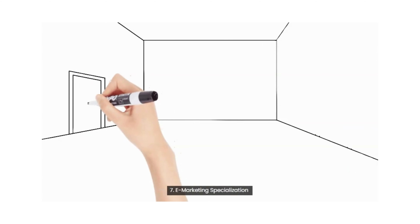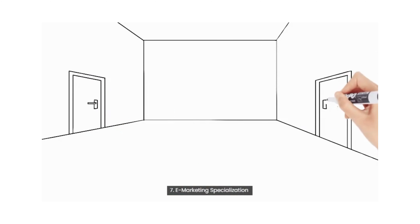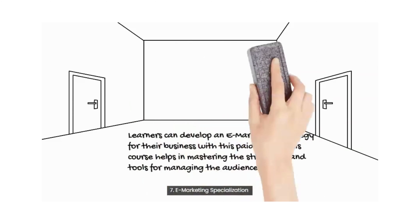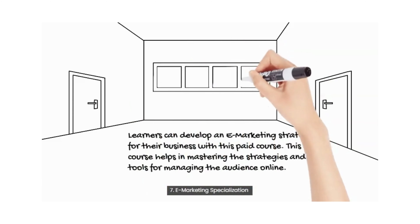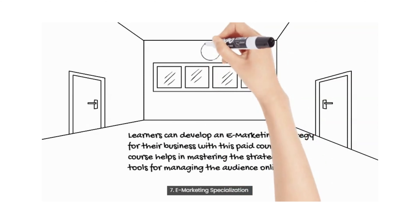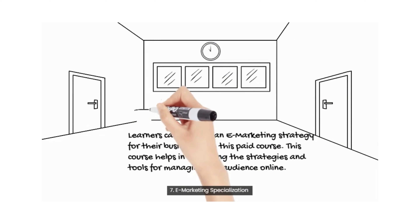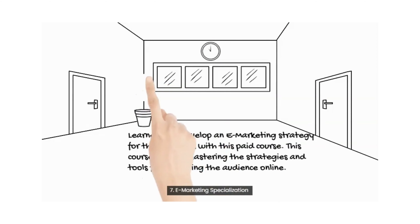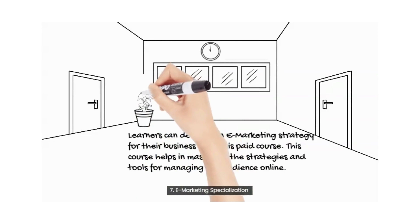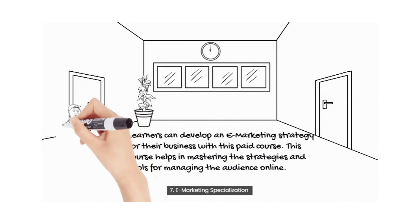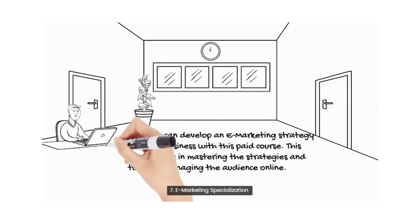Seventh course: E-Marketing Specialization. Learners can develop an e-marketing strategy for their business with this paid course. It helps in mastering the strategies and tools for managing the audience online. Topics covered in this course are e-marketing specialization, identifying, attracting, and growing your digital audience, and strategies for converting and retaining customers online. You should learn this course because it gives all the details from basics to advance for Google Ads. You can use this to enhance your business and grow more. This course is for beginner level — anyone who wants to learn about PPC marketing or is willing to learn at their own pace.